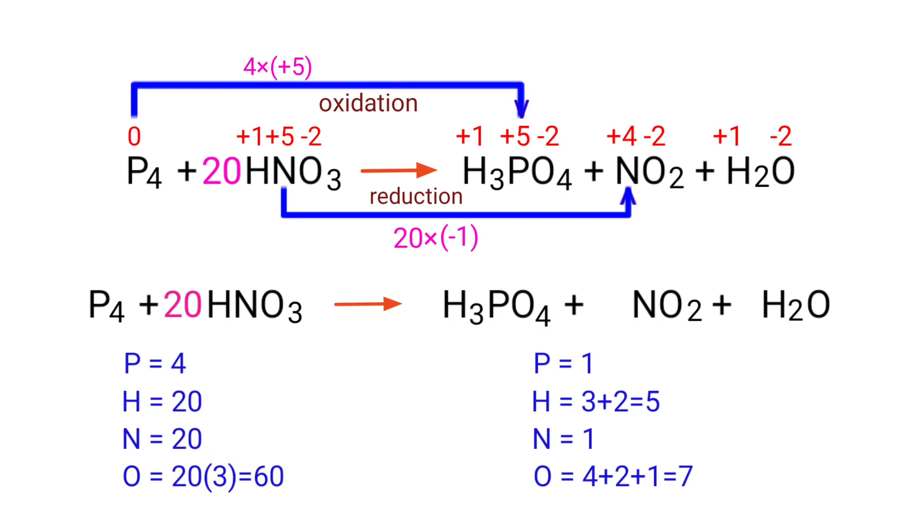In this equation, we need to balance the phosphorus atoms first. To do this, we need to put a coefficient of 4 in front of H3PO4. The phosphorus atoms are balanced.